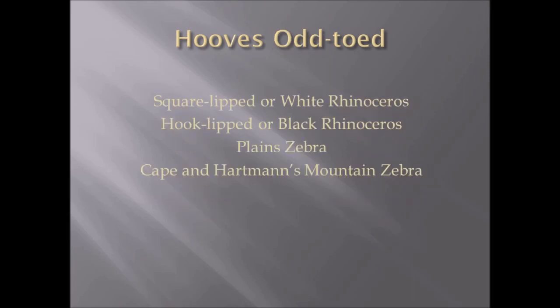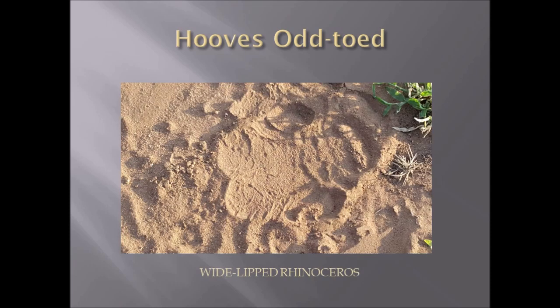Odd-toed hooves: square-lipped or white rhinoceros have three hooves, hook-lipped or black rhinoceros have three hooves on each foot, and plains zebra have a single hoof — an odd-toed number — with two smaller hooves raised in the fetlocks. The Cape horse similarly has three toes but only the central toe will show in the track. Here is an example of a white rhino track: you can see the main central toe and two side toes, and the back of the pad has a characteristic deep indentation typical of a white rhino.